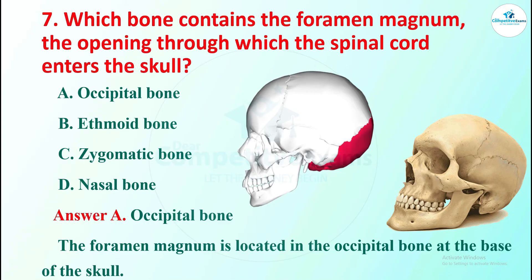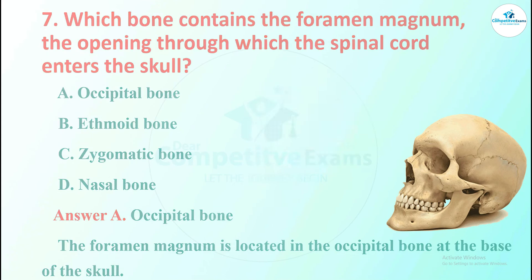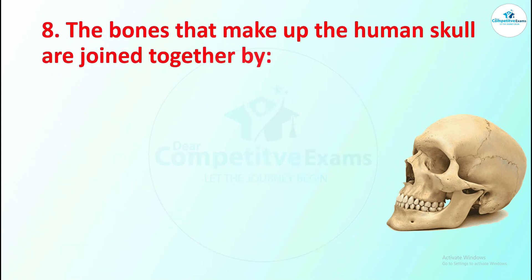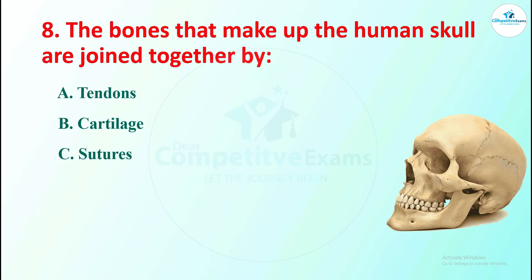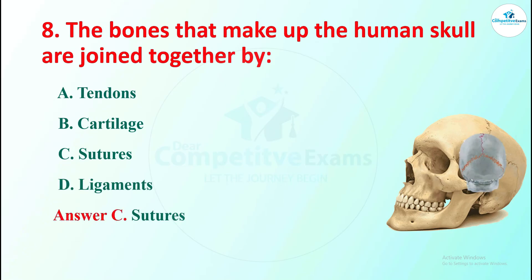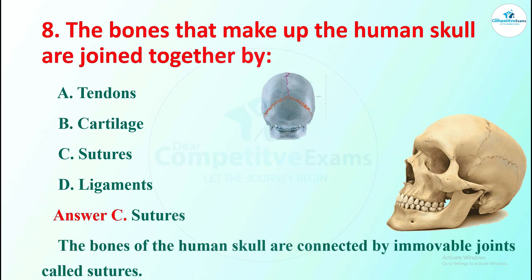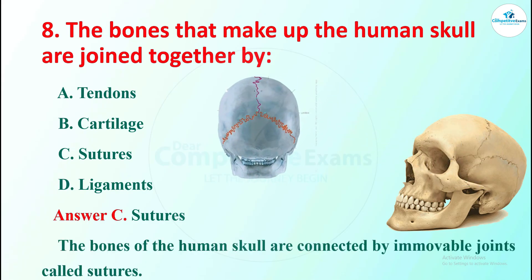Question 8: the bones that make up the human skull are joined together by what? Options are tendons, cartilage, sutures, or ligaments. The right answer is sutures. The bones of the human skull are connected by immovable joints called sutures.